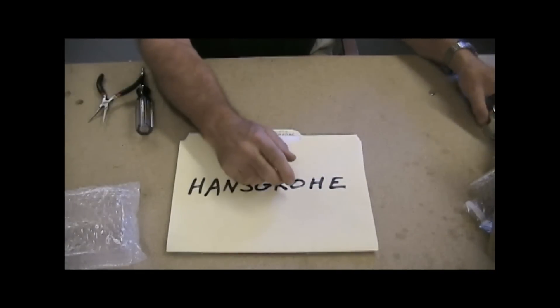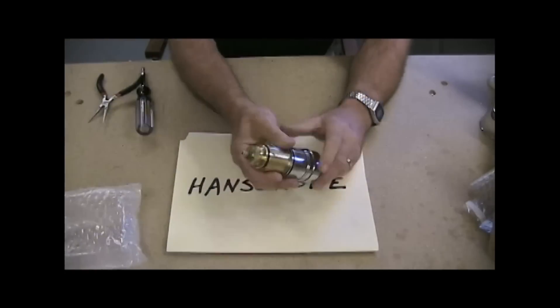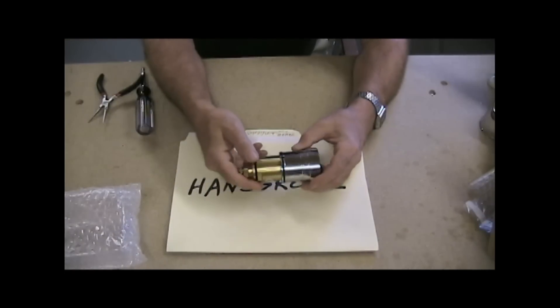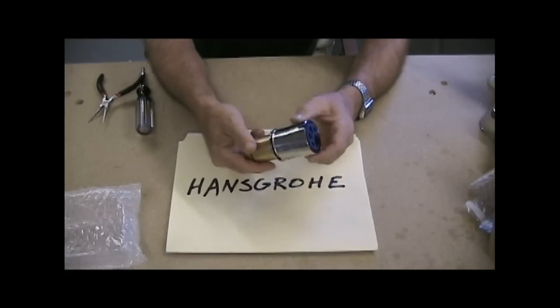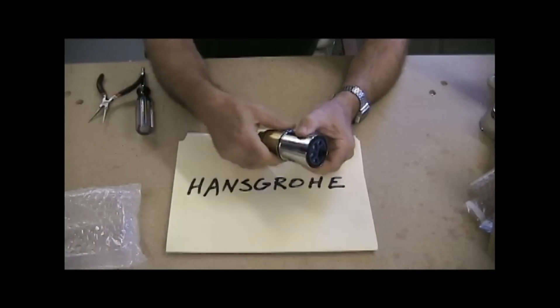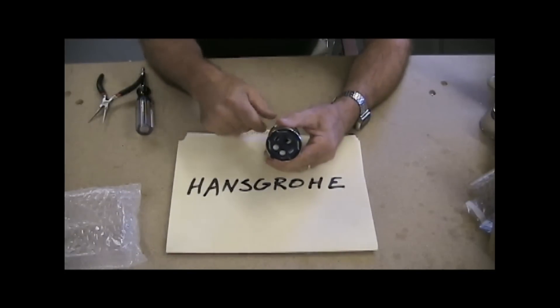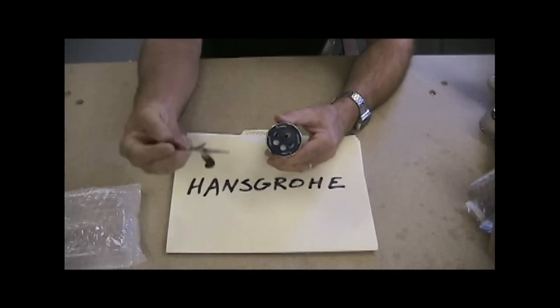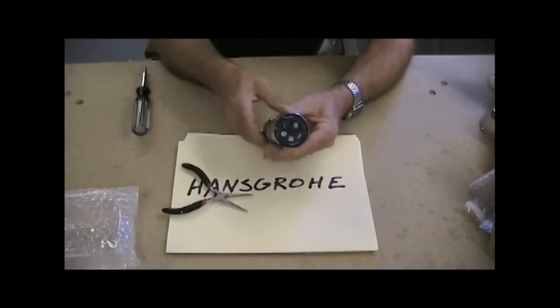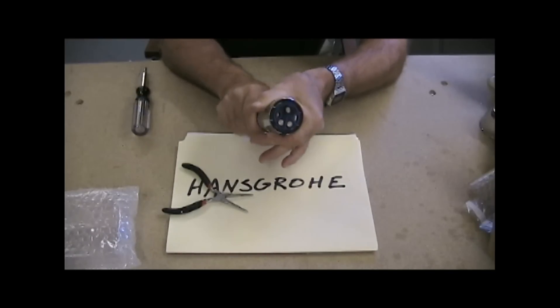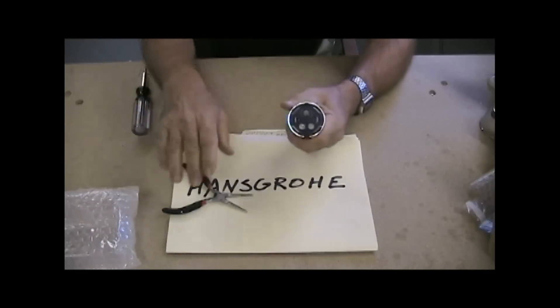So let's get down to the cartridge. This is the cartridge. Same thing, very heavy, very well made, well machined. And this one, if you'll notice in here, has these big ceramic discs. There are the white ones in there. And as I rotate this around, maybe you can see them moving. Let's get them out here so you can take a look at them.